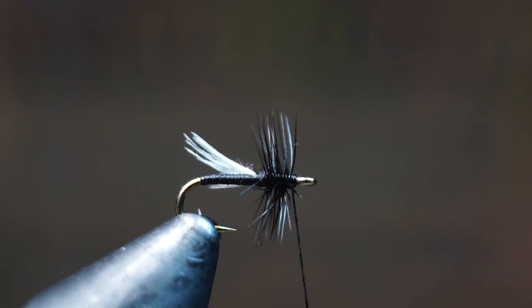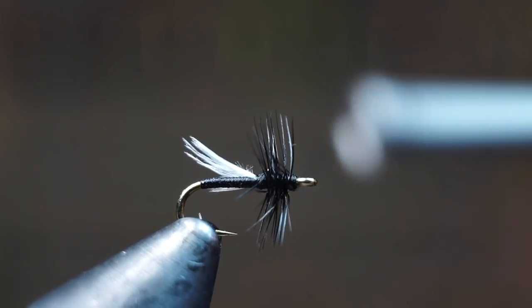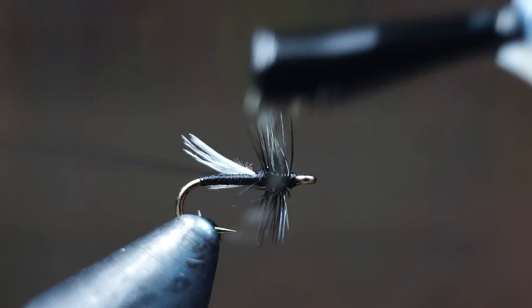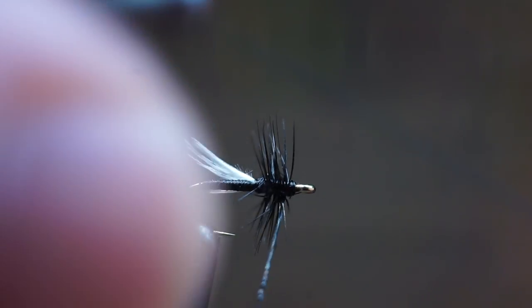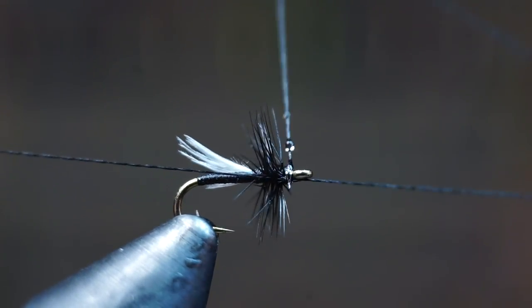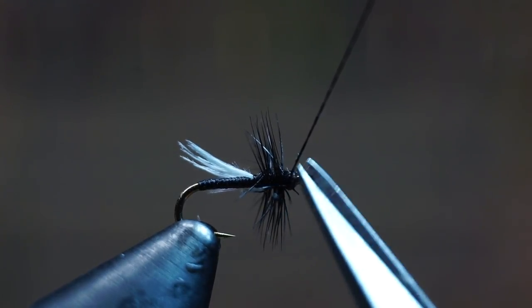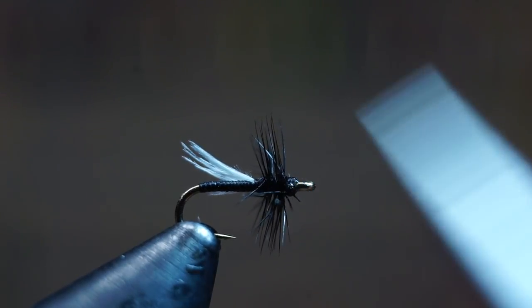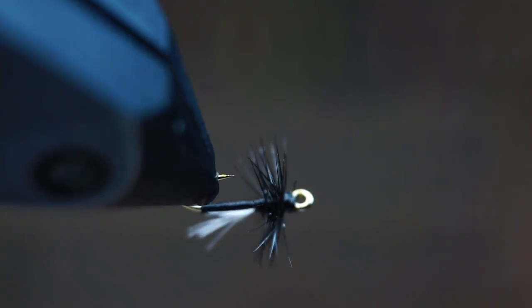Then whip finish your fly. I like to paint a little head cement on the fly before whip finishing, as this will make cementing much easier on this tiny fly. When I clip off the thread, I leave a little tag end as it will help keep the fly more durable and it's really not going to be seen through this hackle either.